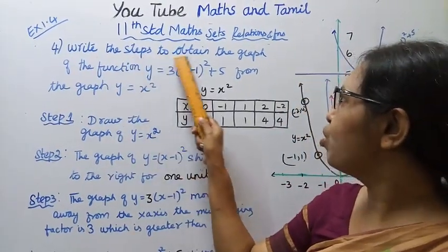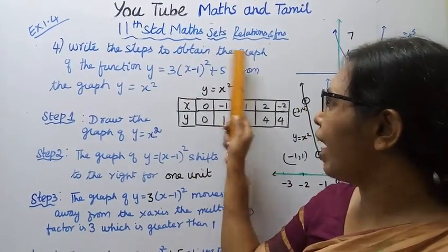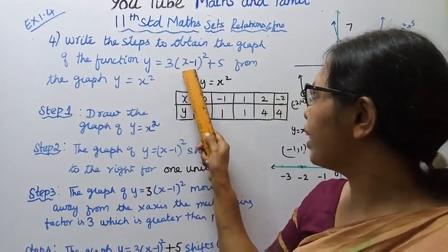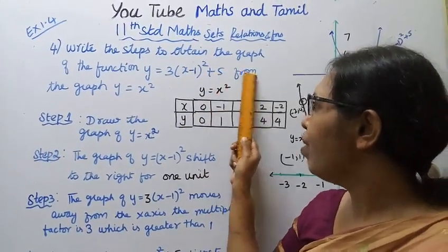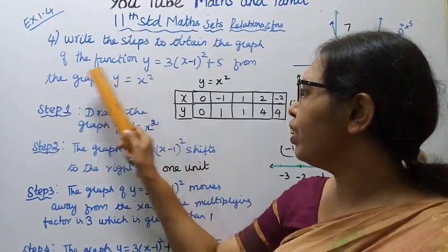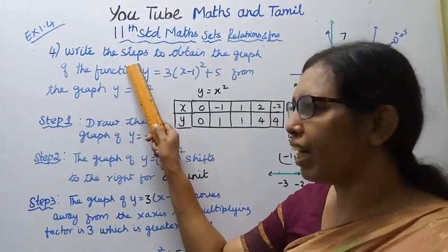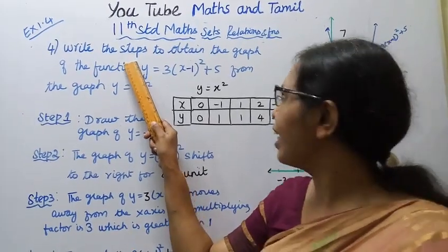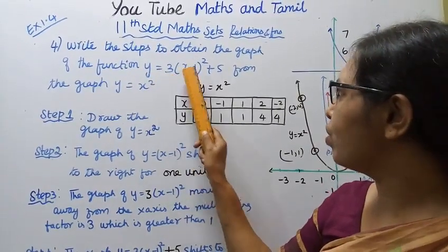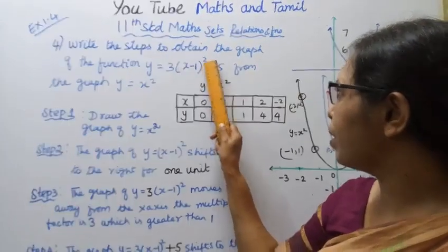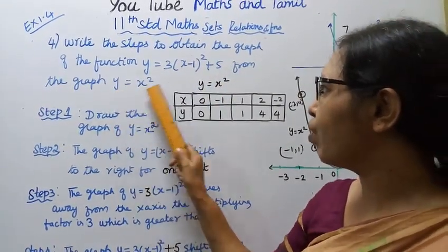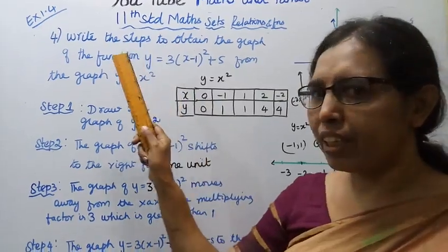Write the steps to obtain the graph of the function y equal to 3 bracket x minus 1, the whole square, plus 5, from the graph y equal to x square. We need to find the steps to obtain the graph of y equal to 3(x-1)² + 5 from the graph y equal to x square.